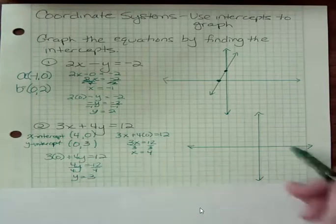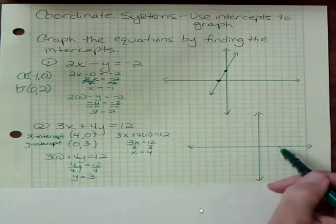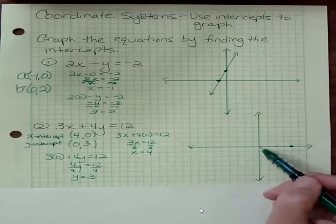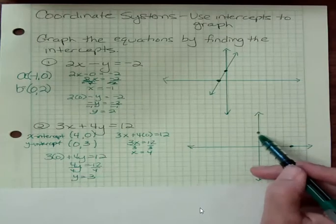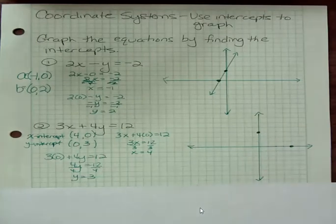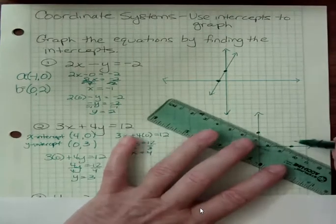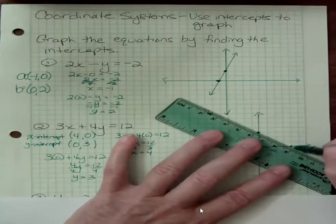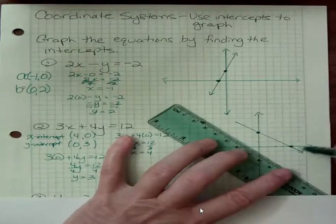So my x-intercept is 4: 1, 2, 3, 4, and my y-intercept is 3: 1, 2, 3. Those two points are enough. You could find a third point for a check if you want it. Those two points are enough to graph our equation, just the intercepts.